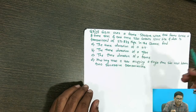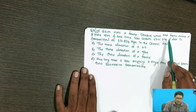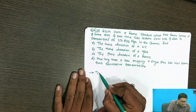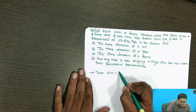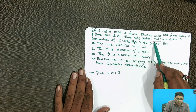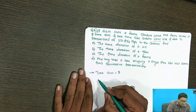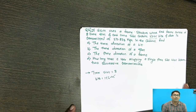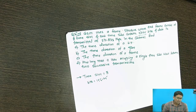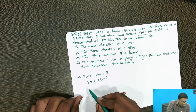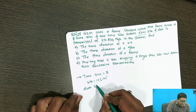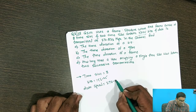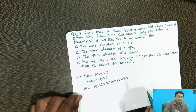Now we want to see that GSM uses a frame structure where each frame consists of 8 time slots. Each time slot contains 156.25 bits. Data is transmitted at a speed of 270.833 kbps. These are the given things.